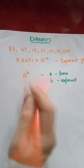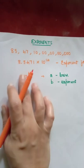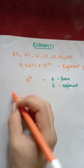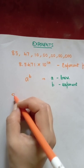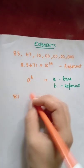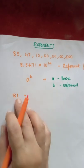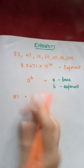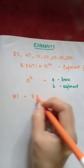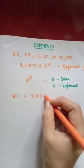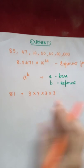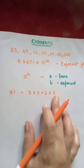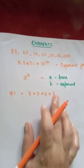You can take any base. See here, suppose you have a number 81. Now 81 can be expressed as 3 into 3. See, 3 into 3 is 9, 9 into 3 is 27, 27 into 3 is 81.